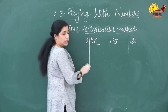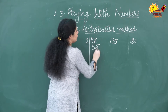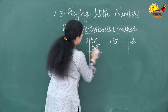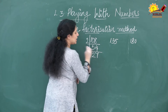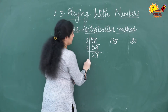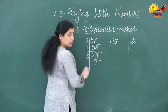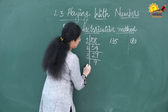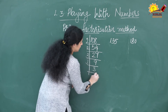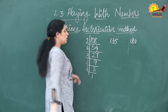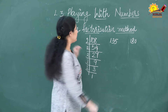Starting with 108, dividing by 2: 54, then by 2 again: 27. Dividing 27 by 3: 9. Dividing 9 by 3: 3. Dividing 3 by 3: 1. So the prime factorization of 108 is complete.